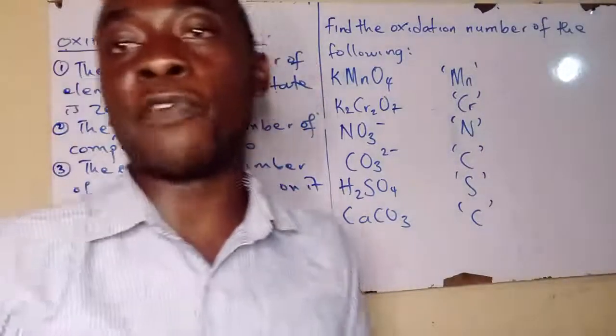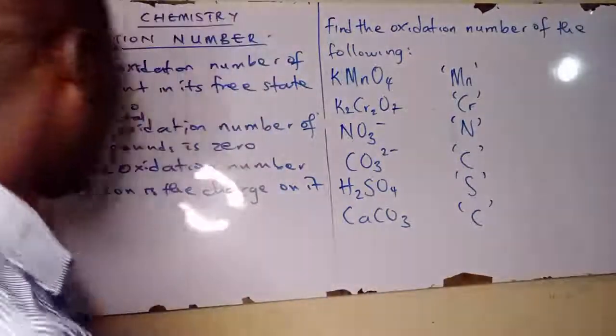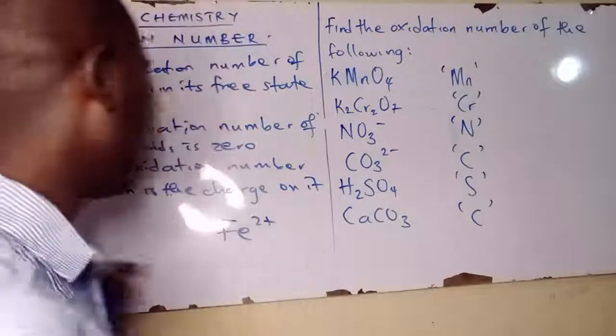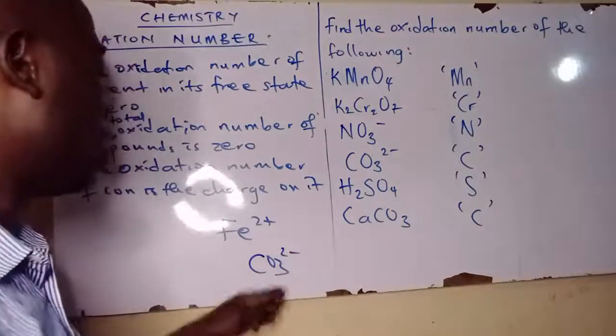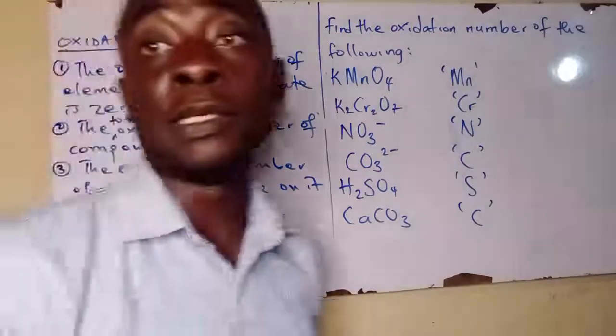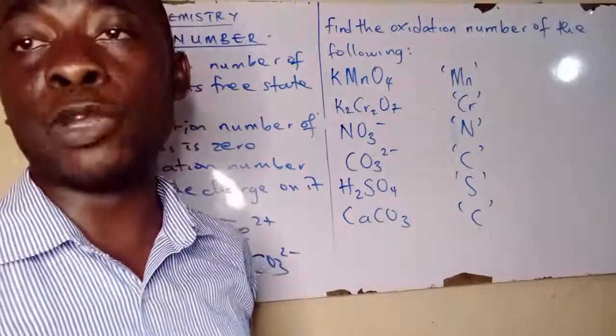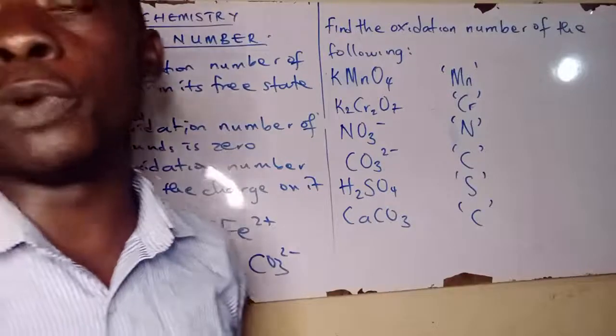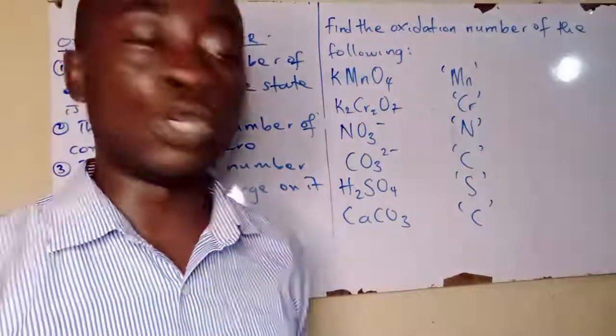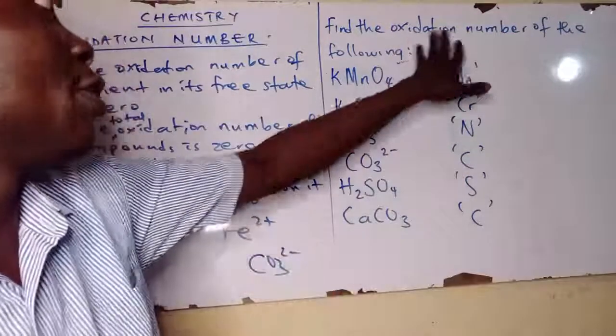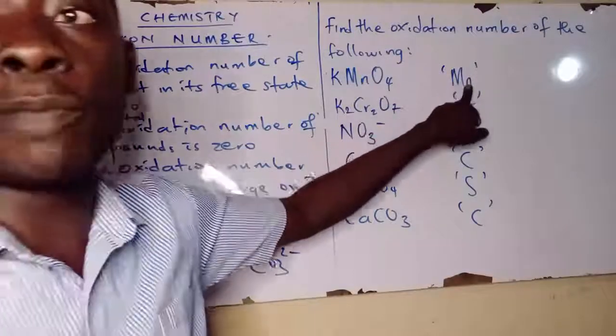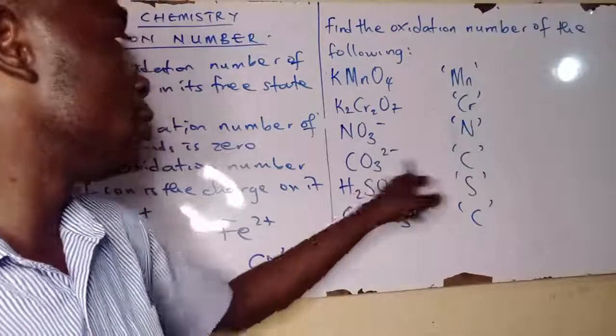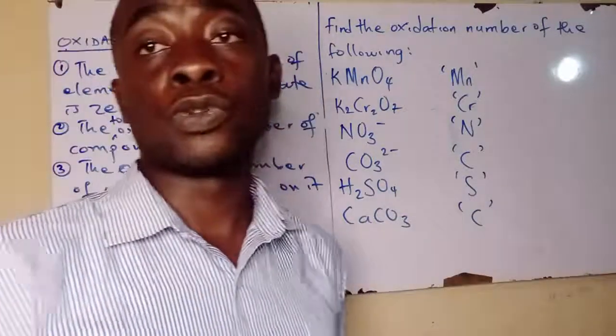The next one is the oxidation number of an ion is the charge on it. For this one, for nitrogen, for carbon, for sulfur. So let's see whether we can be able to solve it.